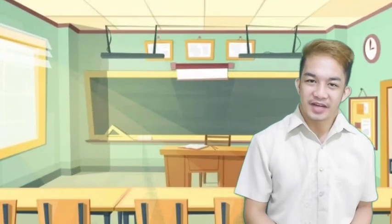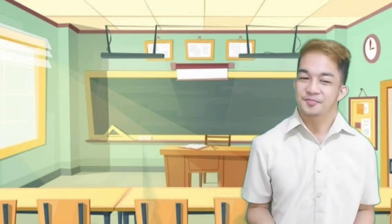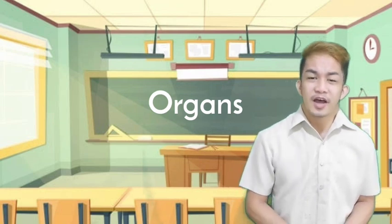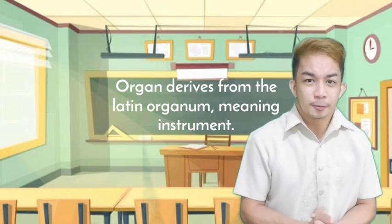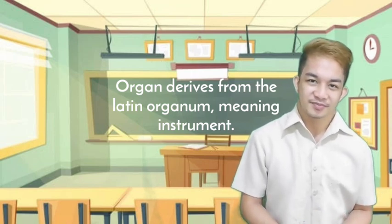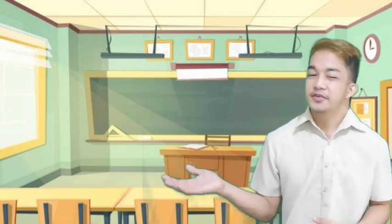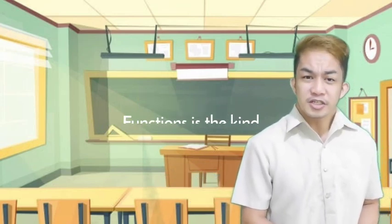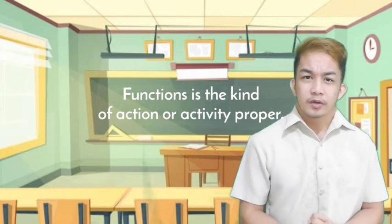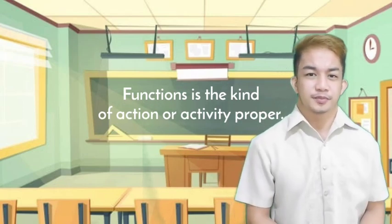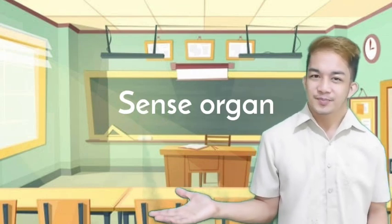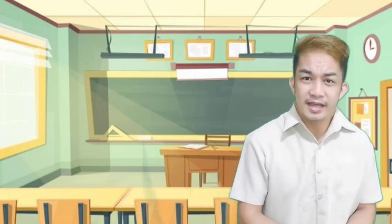Now kids, let's unlock the following words. What are the meanings of the following? Number one: Organs. Organs derived from the Latin word organum, which means instrument. Number two: Functions — this is the kind of action or activity proper. And then the last word: sense organs. What comes to your mind, kids, when you hear the word sense organ?